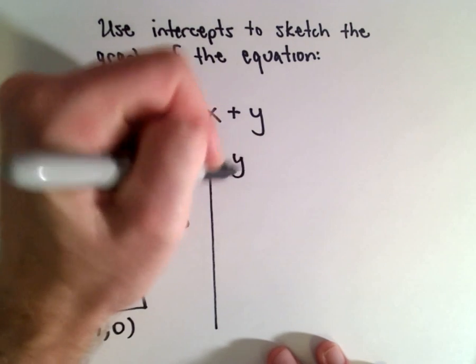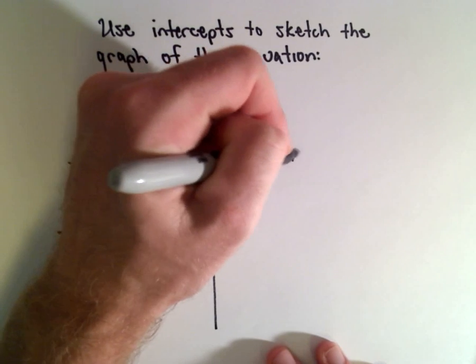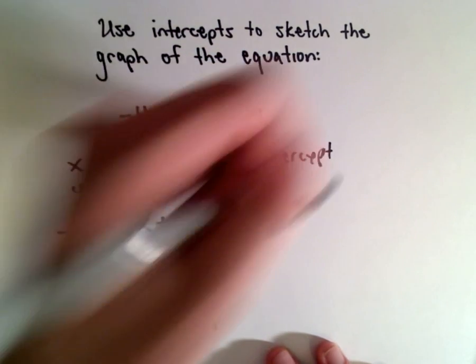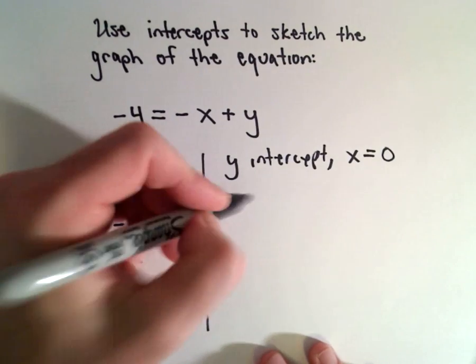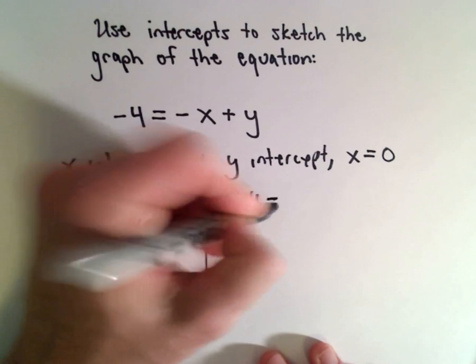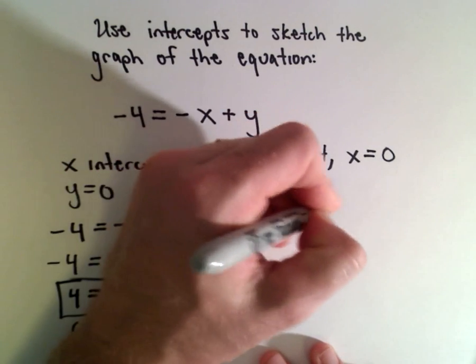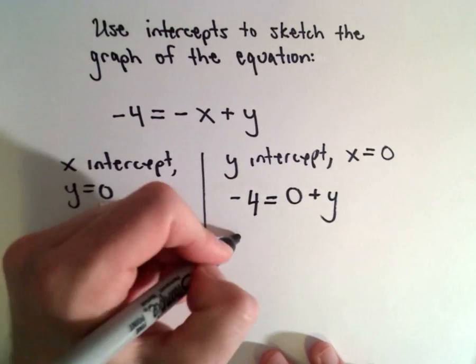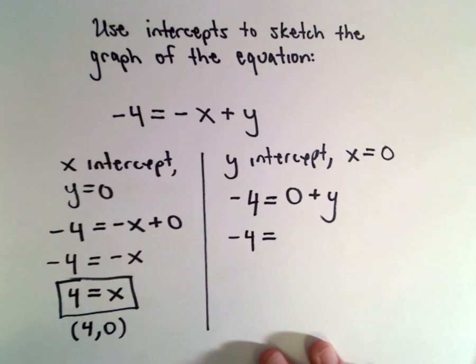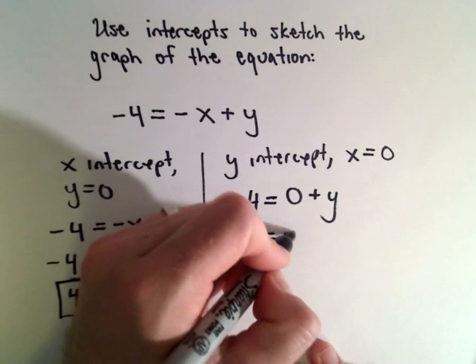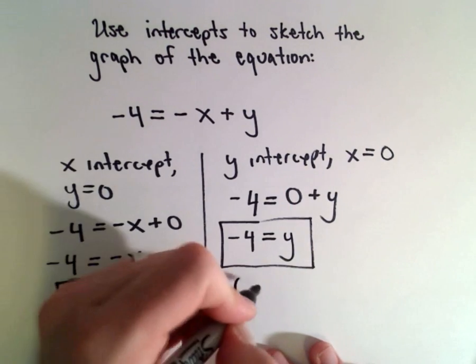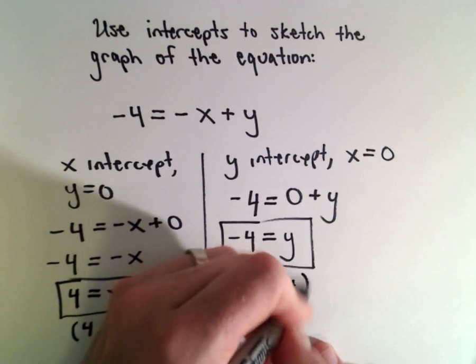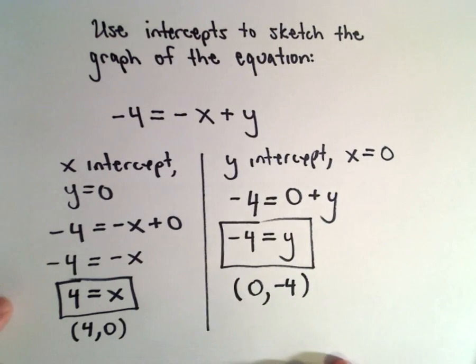Likewise, to find the y-intercept, we just let x equals 0 and then we solve for y. So in that case we'll have negative 4 equals 0 plus y, or there's really not much simplification to do. We'll simply get that negative 4 equals y. So that tells us that the point (0, negative 4) is also on the graph.